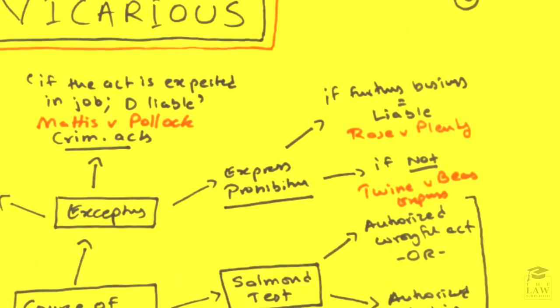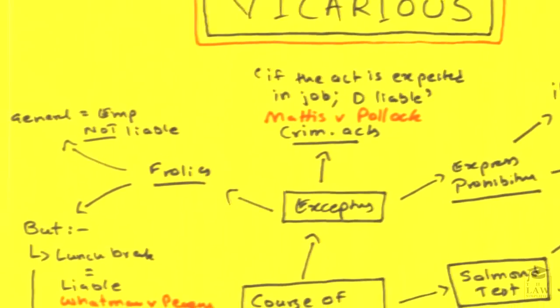There are instances in which an employer may have expressly prohibited something being done by the employee, in which case it would be unfair, unjust, and unreasonable to impose liability on the employer for the employee's acts. However, in Rose and Plenty it was stated that if whatever prohibitory act was mentioned by the employer actually furthers the business of the employer and yet leads to a tort being committed, the employer would still be liable. If not — as in Twine and Beans Express — the defendant employer would not be liable.